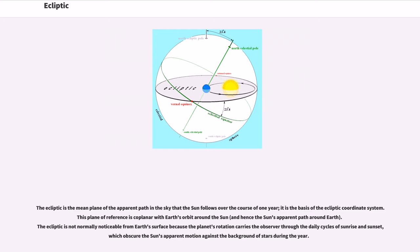And hence the Sun's apparent path around Earth. The ecliptic is not normally noticeable from Earth's surface because the planet's rotation carries the observer through the daily cycles of sunrise and sunset, which obscure the Sun's apparent motion against the background of stars during the year.